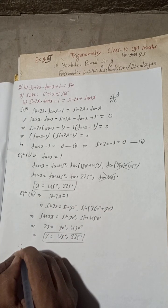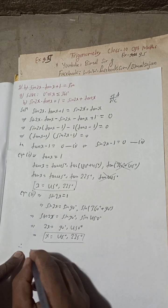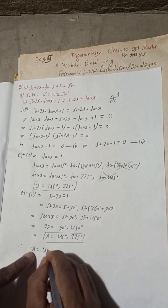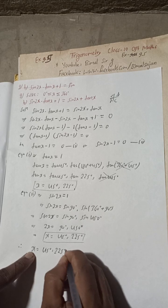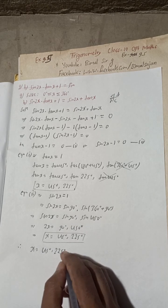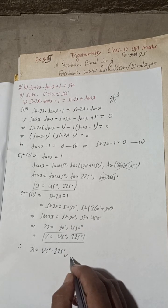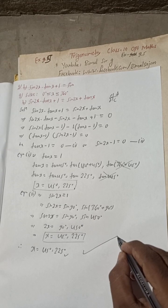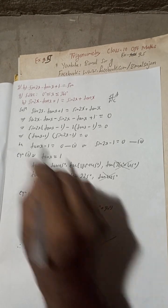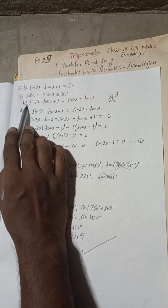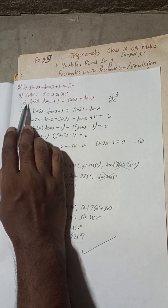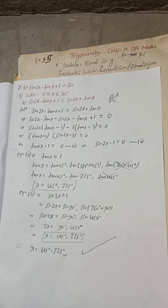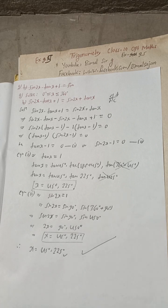Therefore x = 45°, 225°. The book answer is also 45° and 225°, so this matches the book. Note: the answer for 9a does not match because there is a print mistake in the book for question 9a.